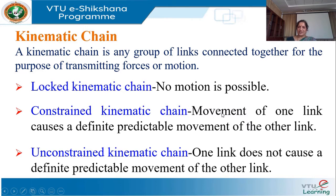We also discussed what a link is. A link is a rigid body or a resistant body — it is a basic element of a mechanism. There are different types of links based on the number of ends: binary link, ternary link, and quaternary link. We also discussed what a kinematic pair is. A kinematic pair is the joining of two links with relative motion between them.